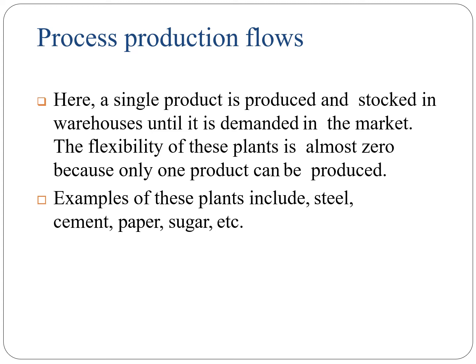In process production, single products are produced and stocked in a warehouse until they are demanded in the market. The flexibility of this plant is almost zero because only one product can be produced at a time. Examples of process production include steel, cement, paper, sugar, etc.